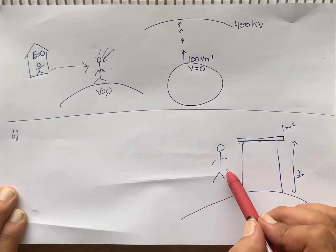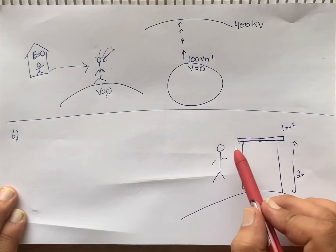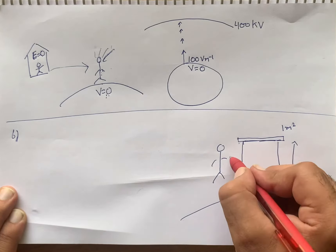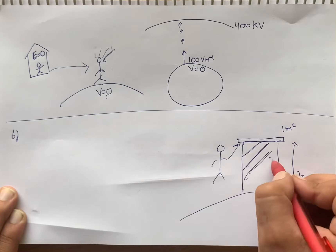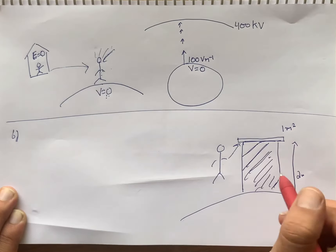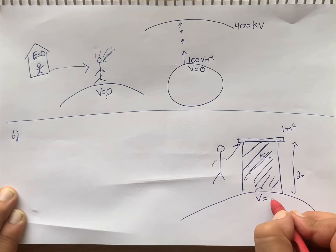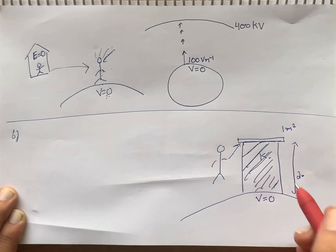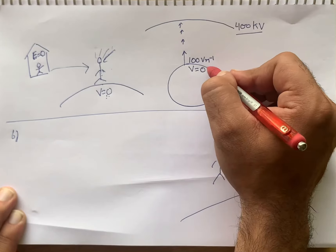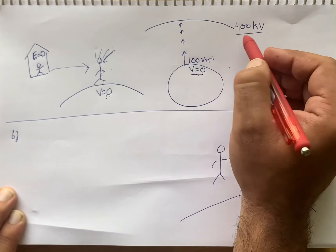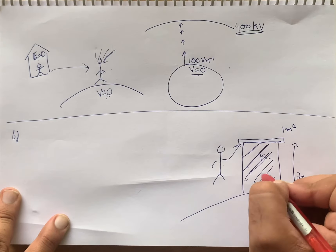Now, option B dekh lete hain. A man fixes outside his house one evening a two-meter high insulating slab, carrying on its top a large aluminium sheet of area one meter square. Will he get an electrical shock if he touches the metal sheet next morning? Toh is concept ko bhi dekh lete hain — option B mein humhare paas kya hai? Ki a man apne ghar ke bahar fix kar raha hai ek insulating slab jis ki height hai two meter, and top of insulating slab humhare paas ek aluminium sheet hai jis ka area hai one meter square.